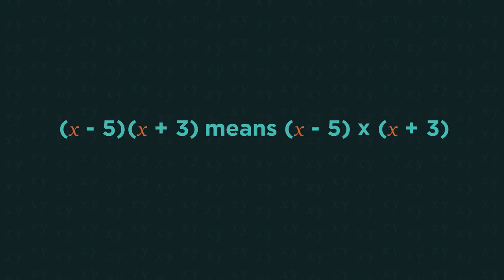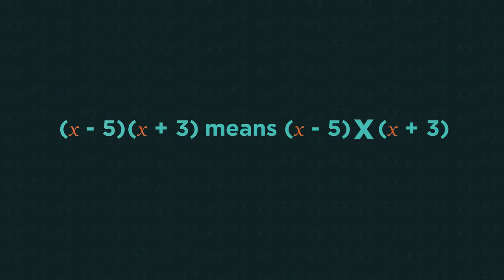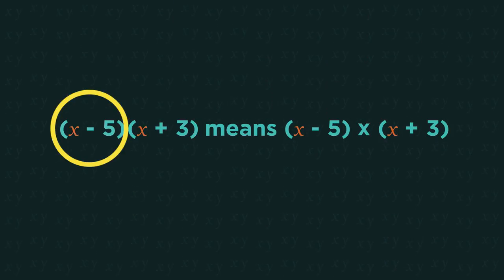Remember that in algebra, when two things are next to each other, it means they are multiplied. So we need to multiply everything in the second bracket by everything in the first bracket. I'm going to show you two methods, and then you choose whichever one you prefer.